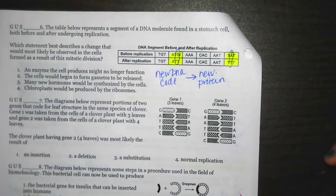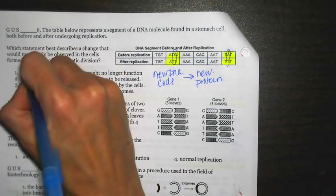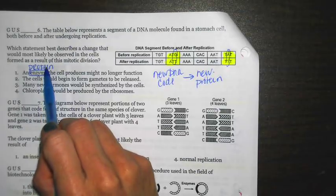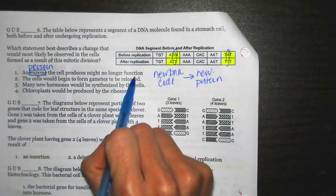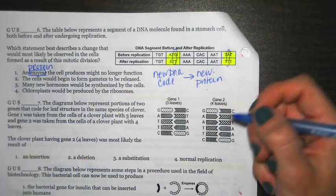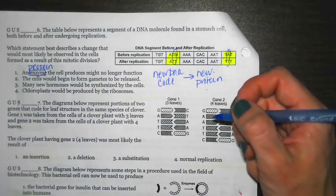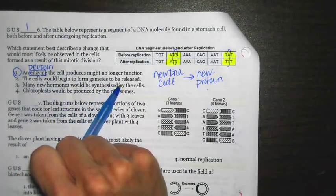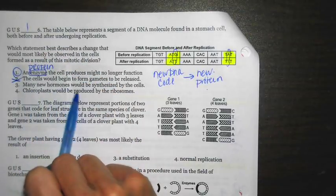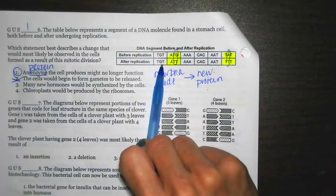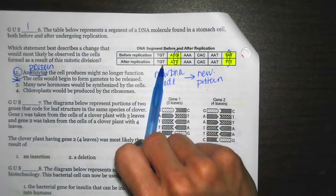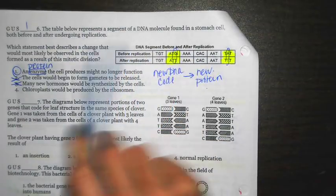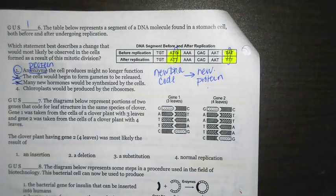Number one says, an enzyme that the cell produces might no longer function. Remember an enzyme, and they'll do this frequently, they use the word enzyme, as a replacement for a protein. Because they're thinking you should remember that an enzyme is a specific type of protein. So an enzyme, the cell produces might no longer function. Well, if you have a new protein, it'll have a new shape. And then if it has a new shape, it'll have a new function. So it will not work the way that it's intended to. So number one is probably the best answer. But if I keep going, the cells would begin to form gametes to be released. That doesn't really make any sense. Number three says, many new hormones would be synthesized by the cell. Well, the code, right, this is just one gene. They're not going to make a ton of new hormones. And if anything, they'd be improperly shaped, so they wouldn't work properly. And then chloroplast would be produced by the ribosomes. This does not mention anywhere something about chloroplast or ribosomes. So we'll cross that one off.